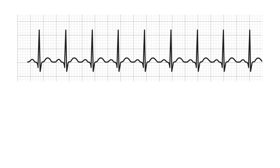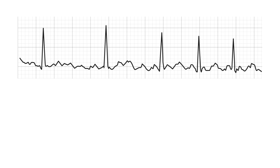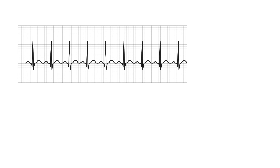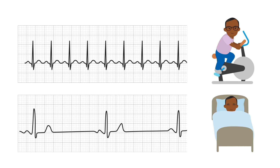Once we've established the initial baseline rhythm, we go on to look for any episodes of tachycardia or bradycardia that we may want to assess in more detail. During these episodes, is the rhythm still sinus or is there evidence of atrial or ventricular arrhythmias, or any evidence of atrioventricular block? What was the patient doing at the time? Is the rhythm appropriate for the context, such as sinus tachycardia when exercising, or sinus bradycardia when sleeping?